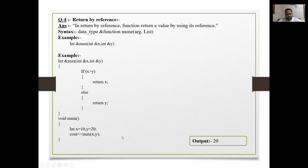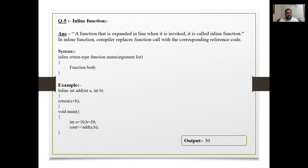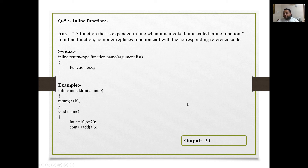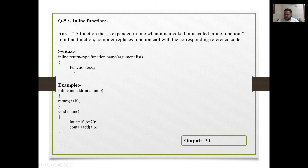Next is inline function. A function that is expanded inline when it is invoked (invoked means called/entered) is called an inline function. The compiler replaces the function call with the corresponding inline code, which decreases execution time — meaning the program executes faster. The syntax is: 'inline' before the data type or return type, then function name, argument list, then function body.